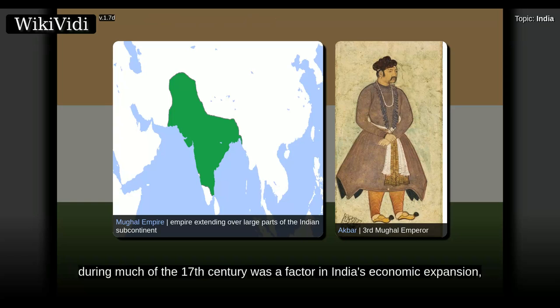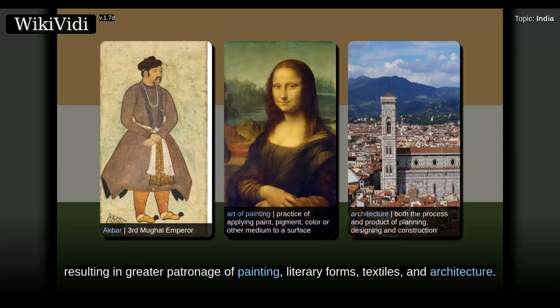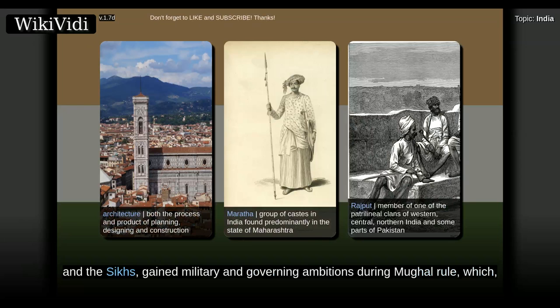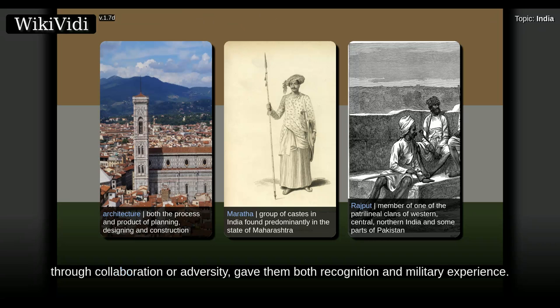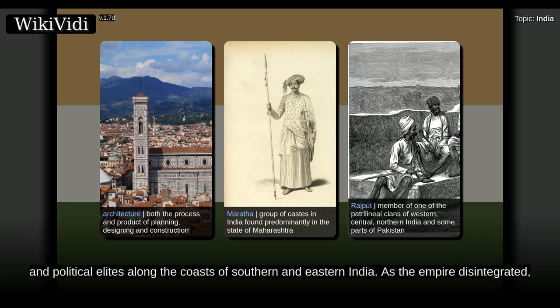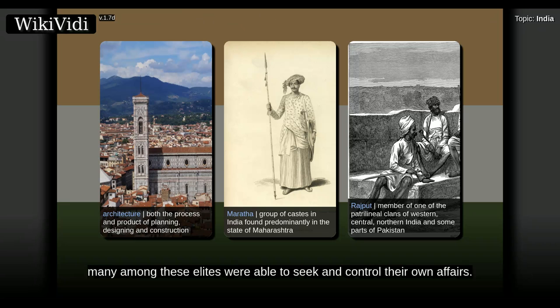The relative peace maintained by the empire during much of the 17th century was a factor in India's economic expansion, resulting in greater patronage of painting, literary forms, textiles, and architecture. Newly coherent social groups in northern and western India, such as the Marathas, the Rajputs, and the Sikhs, gained military and governing ambitions during Mughal rule, which through collaboration or adversity gave them both recognition and military experience. Expanding commerce during Mughal rule gave rise to new Indian commercial and political elites along the coasts of southern and eastern India. As the empire disintegrated, many among these elites were able to seek and control their own affairs.